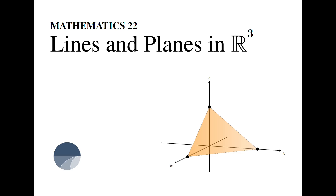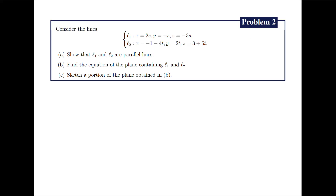We move on to the second problem. We are given two lines. Line L1 is defined by the parametric equations x equals 2s, y equals negative s, and z equals negative 3s. On the other hand, L2 is defined by the parametric equations x equals negative 1 minus 4t, y equals 2t, and z equals 3 plus 6t.